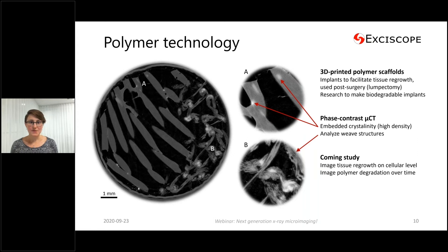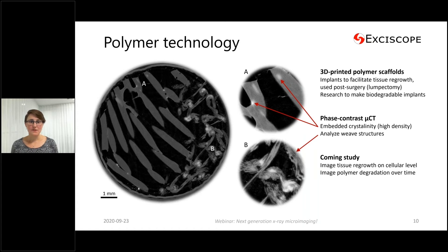New tissue is meant to grow into the scaffolds, and the group is developing the idea of making scaffolds biodegradable. In their first phase contrast micro-CT study, they found embedded crystallinities, and these crystallinities might actually have a negative impact on the biodegradability.